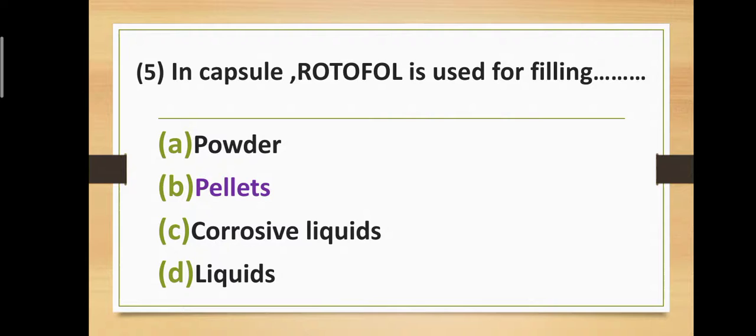Question number five: In capsules, rotofol is used for filling what? Option A: powder. Option B: for filling pellets. Option C: corrosive liquids. Option D: for filling liquids. The correct answer is option B — for filling pellets. In capsules, rotofol is used for filling pellets.